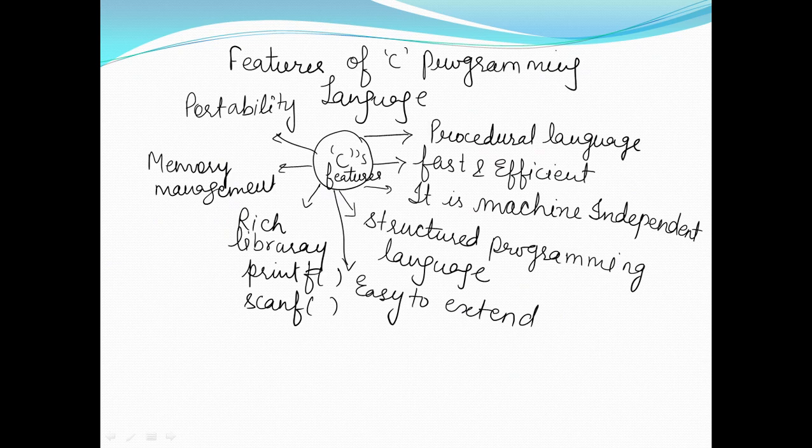Features of C programming language. We explain about procedural language. The C language is a procedural language. Procedural means we can write programs step-by-step. This language means that we give the instructions and execute them step-by-step.